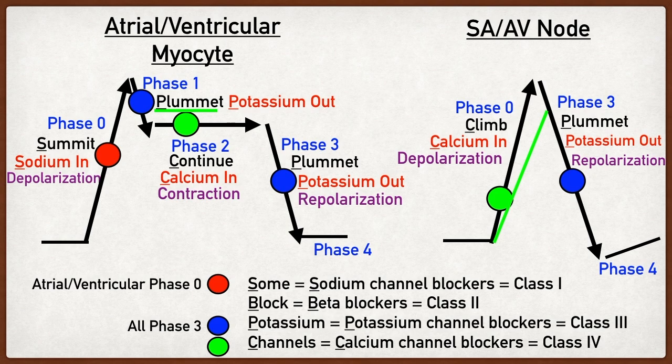In summary, calcium channel blockers block phase two of the non-pacemaker cardiac myocytes that lead to contraction, and they block phase zero of the pacemaker cells, including the SA node and AV node, that would normally lead to depolarization.